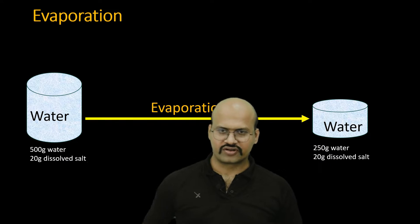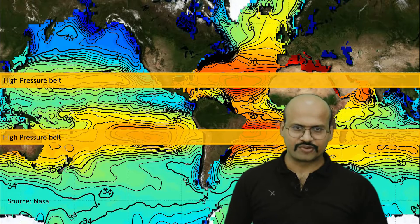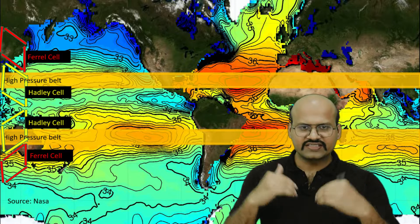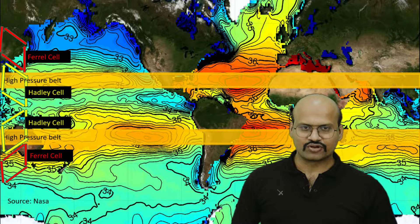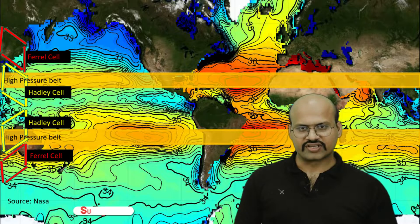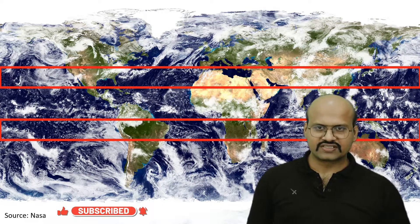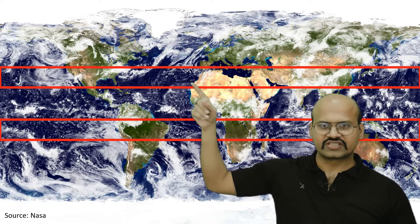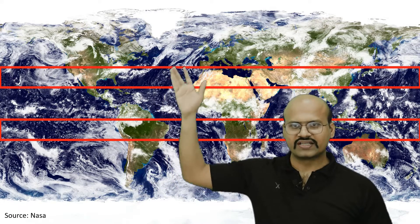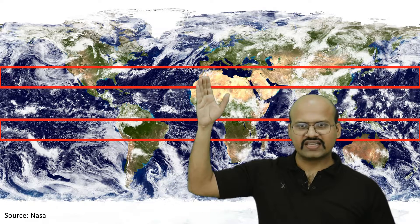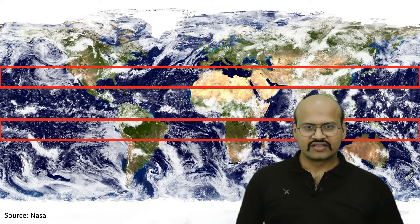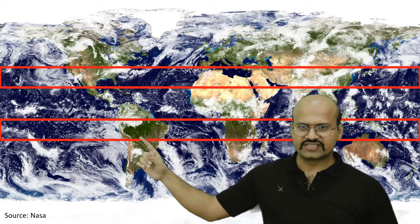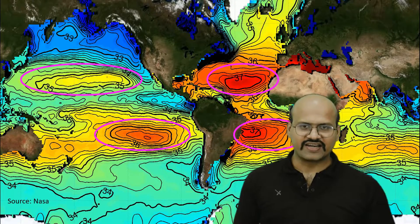In these regions, there is a high pressure belt because the Hadley cell and Ferrel cell meet here — air descends, is adiabatically heated, and an anticyclonic region is produced. Air moves away from this anticyclonic region, so these regions do not have much cloud cover, as we can see in this figure. Sun rays can directly reach the ocean water here, causing maximum evaporation. That is why maximum salinity occurs in these tropical regions and not at the equatorial region — in both hemispheres, highest salinity regions are around 10° to 20° north and south.